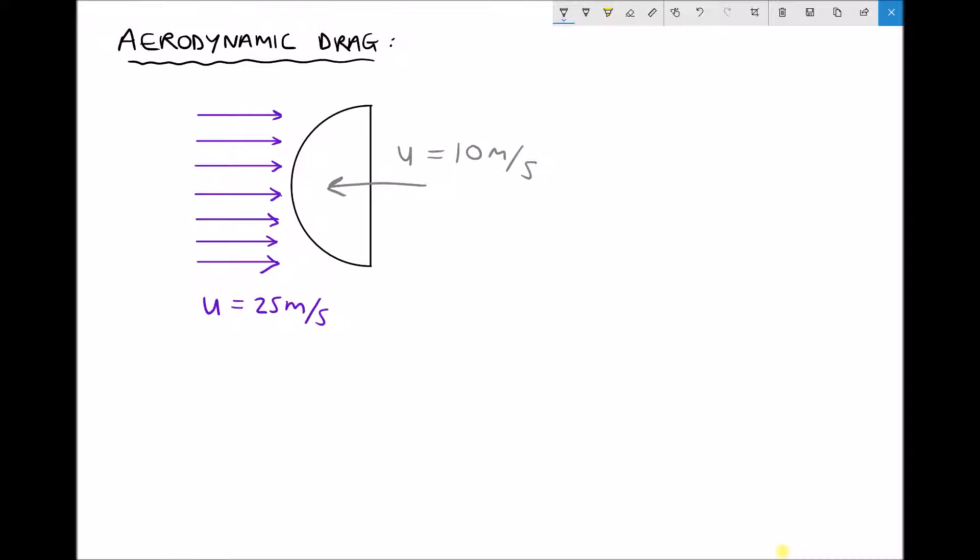Conversely, if the hemisphere travels away from the wind at 10 meters per second, the relative wind is only 15 meters per second. This is because the hemisphere travels in the same direction. We need the net result - the speed of the wind relative to the object.